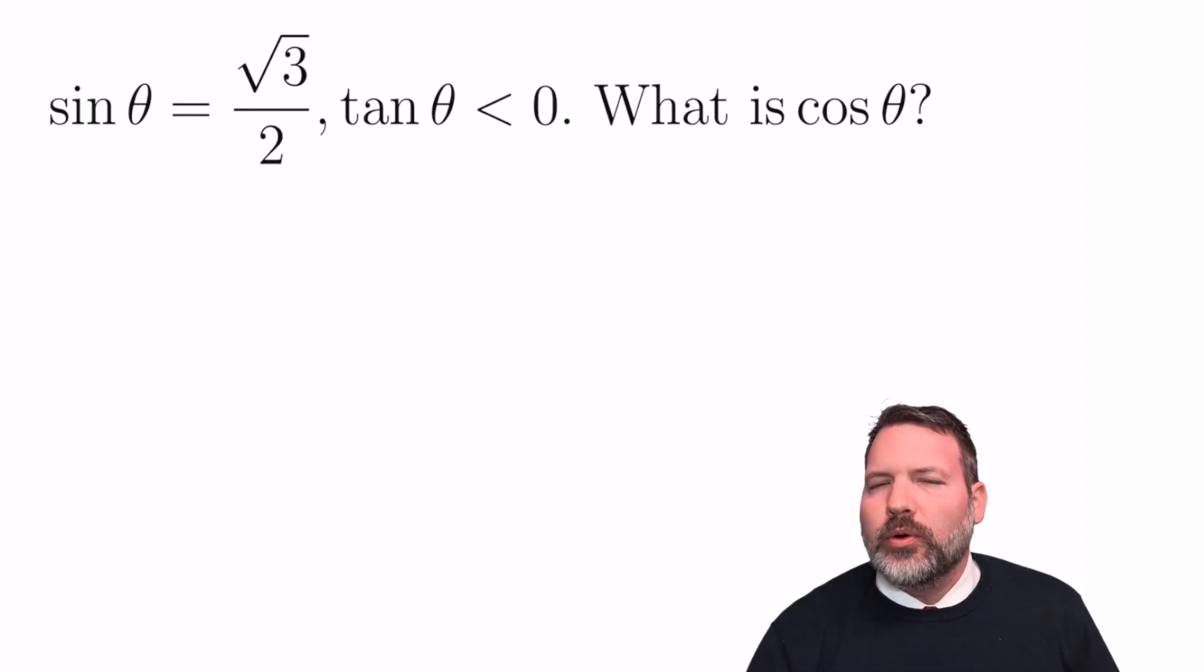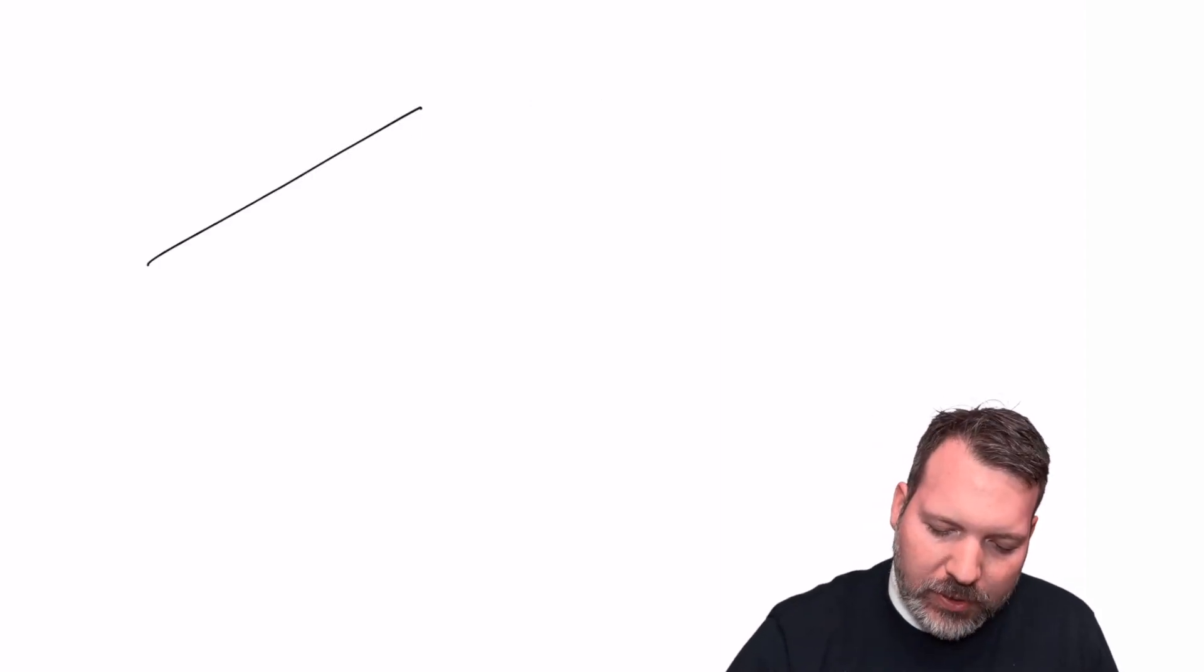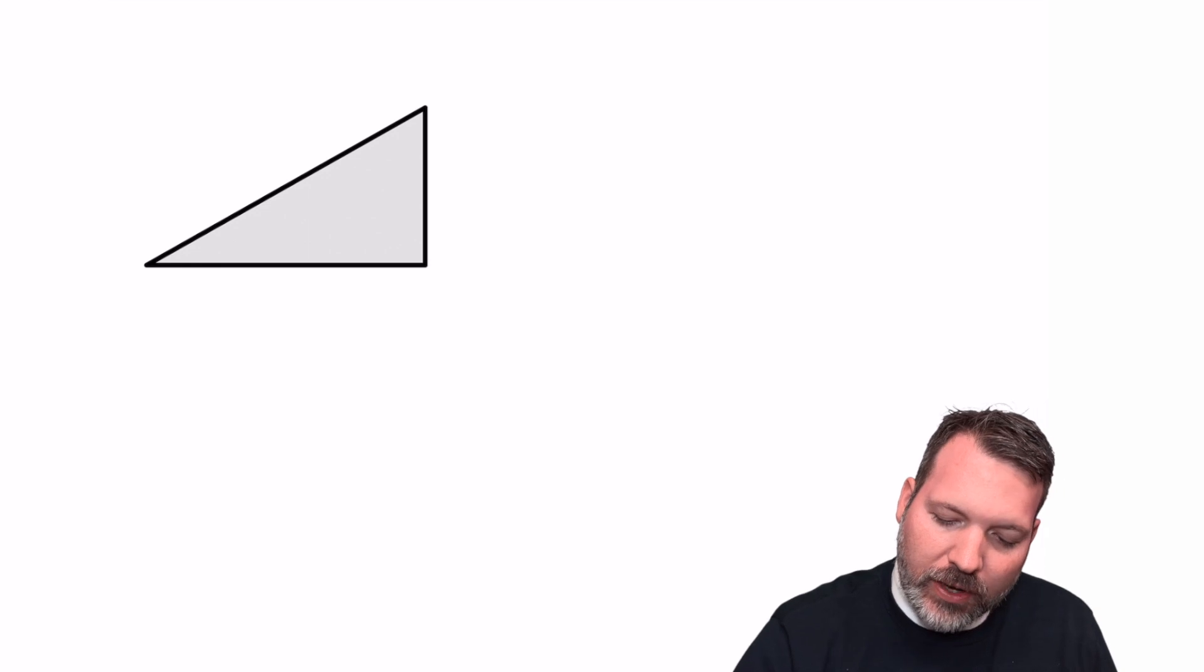You know, trigonometry might be the worst named math subject in all of K through 12 math. It's not that bad at first, because teachers typically introduce it using right triangles.